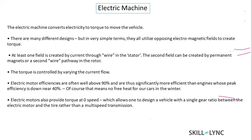Now going through the components one by one, starting with the electric machine. There are many different designs — the electric machine converts electricity to torque to move the vehicle. There are different types, ranging from DC machines to AC machines, including AC induction motors, interior permanent magnet motors, and surface permanent magnet motors.